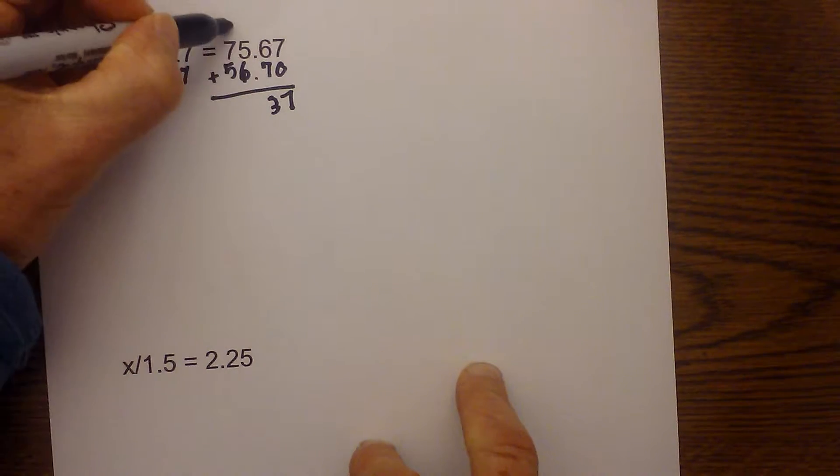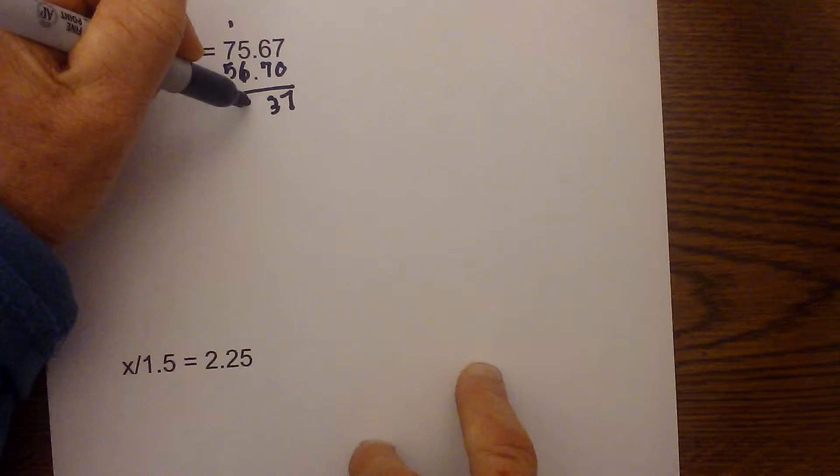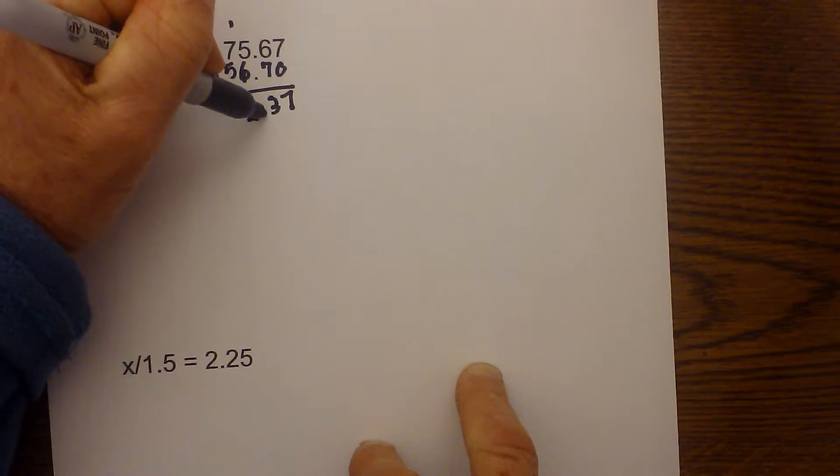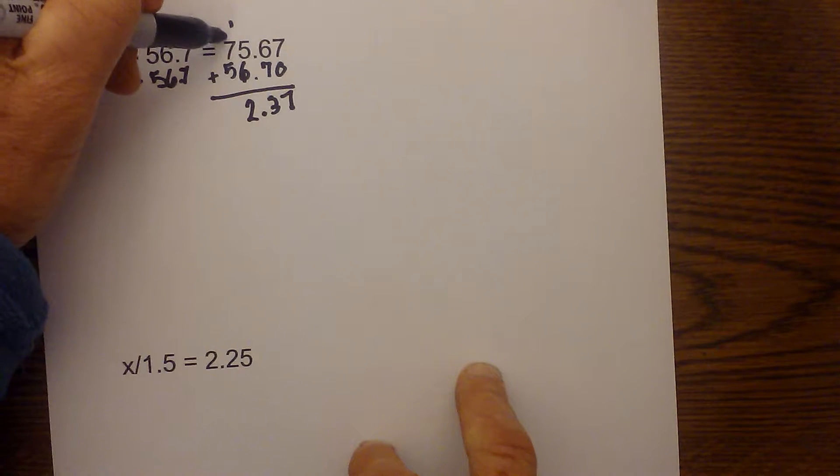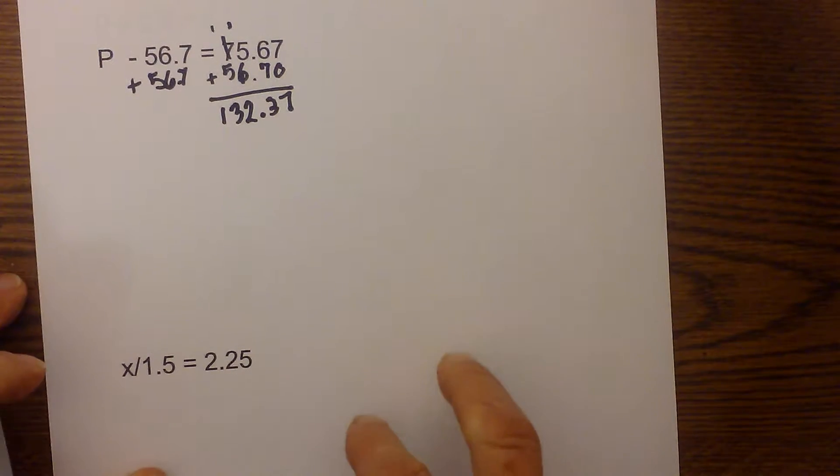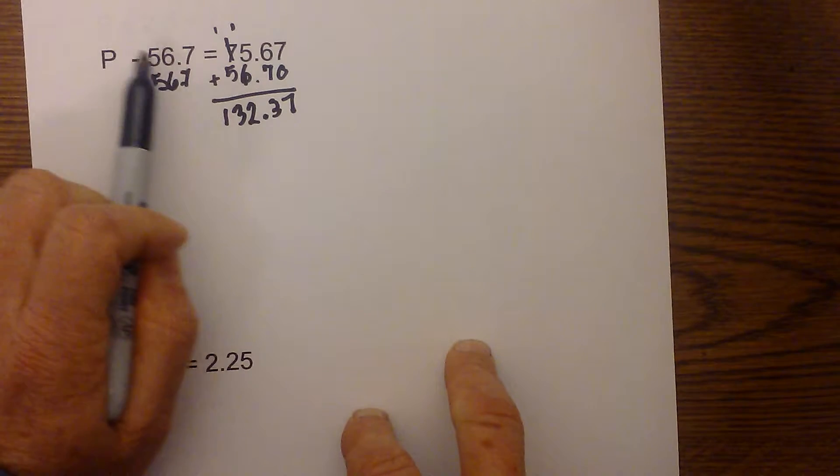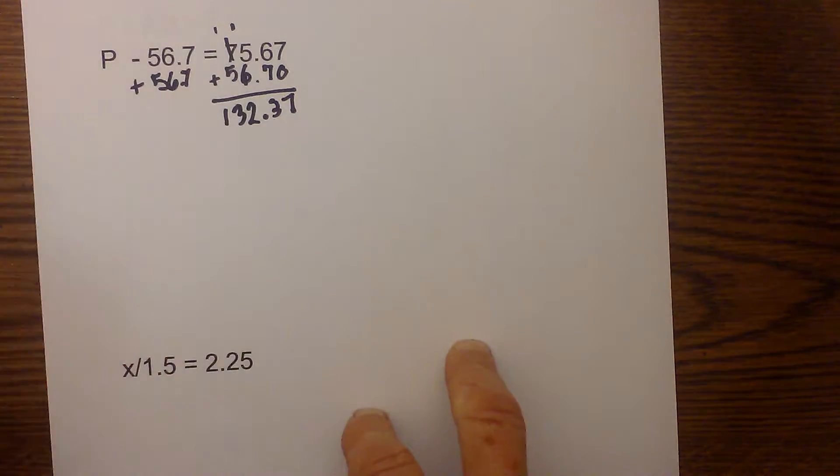This becomes a 3 carry 1. That is 11, 12 remember the decimal and then add 1 here so that is 8 and that will be 132.37. And again remember how I lined up the decimals. I undid and did the same on both sides.